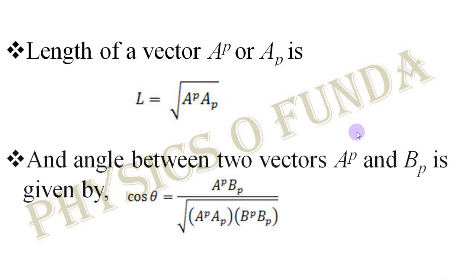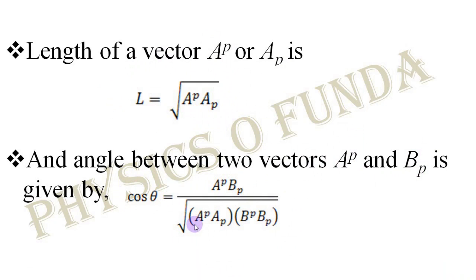Now, what is the angle between two vectors A^p and B_p, where A^p is the contravariant vector and B_p is the covariant vector? The cosine of the angle is: cos θ = (A^p B_p) / √(A^p A_p · B^q B_q). The numerator represents the inner product between A^p and B_p. The first term in the denominator represents the magnitude (length) of vector A^p, and the second term represents the magnitude of vector B_p.